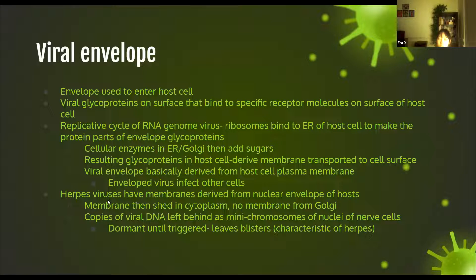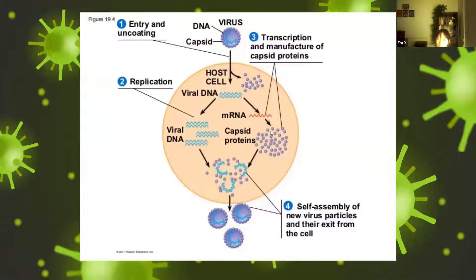Something unique about the herpes virus is that it has membranes in its envelope derived from the nuclear envelope of the host. The nuclear envelope surrounds the nucleus, which contains all the genetic material. This membrane is shed into the cytoplasm, and as this happens, copies of viral DNA are left behind as many chromosomes in the nuclei of nerve cells. These copies of viral DNA do not actually produce viruses until triggered, but when they are, they produce blisters — the characteristic symptom of herpes.